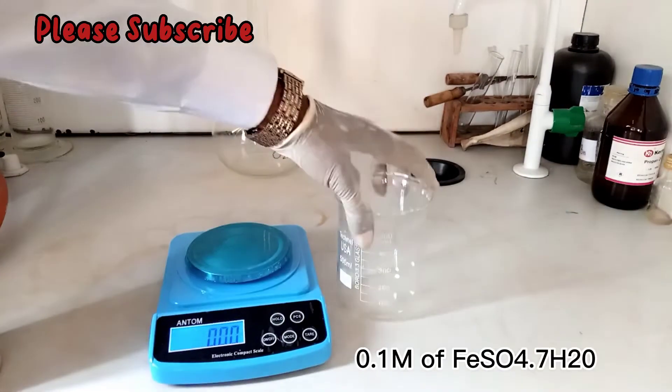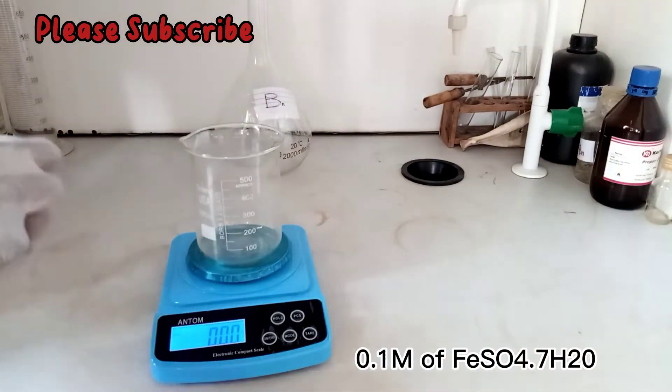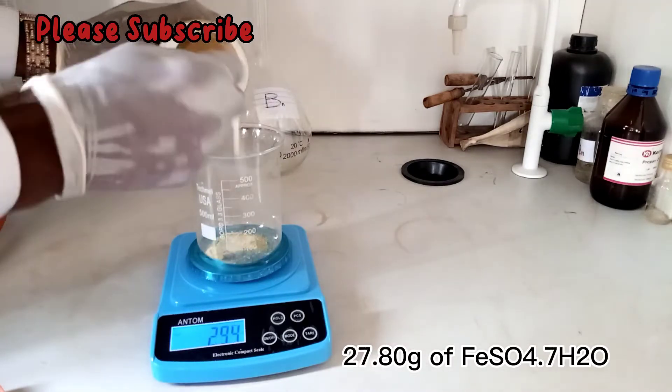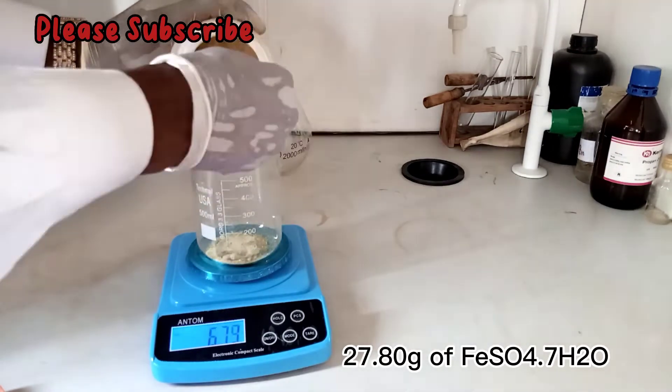Here is how you prepare 0.1 mole of iron sulfate. First we weigh out 27.8 grams of iron sulfate.